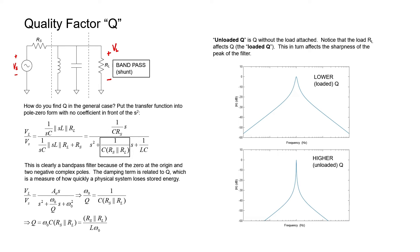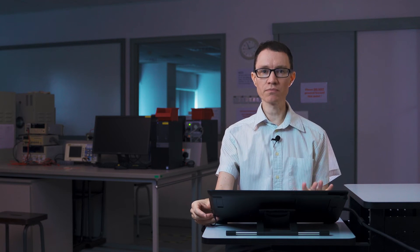If we have a loaded Q, it's going to use up more power from the circuit, have a smaller load resistance, and we're going to wind up with a wider peak at the center of the passband. For a larger load resistance, on the other hand, we're going to call it an unloaded Q or an unloaded circuit, and the Q is going to result in a tighter peak right there at the center of the passband. So just some terminology for you to be aware of.